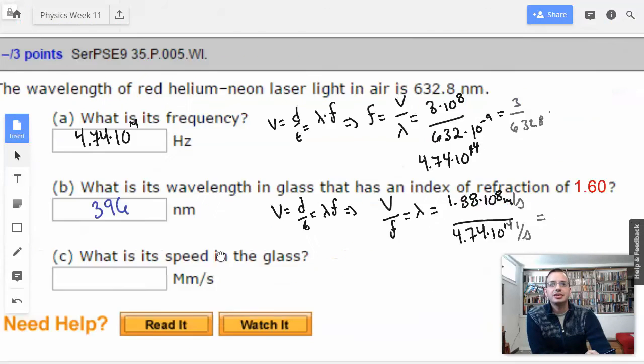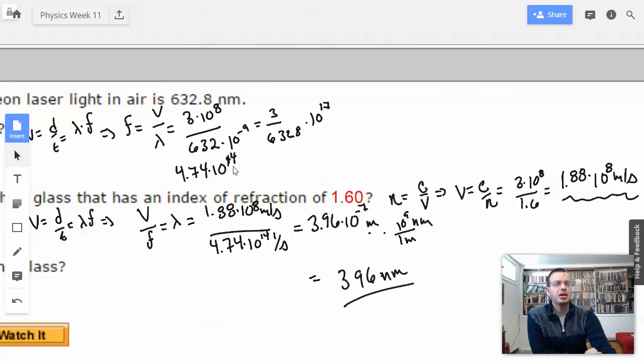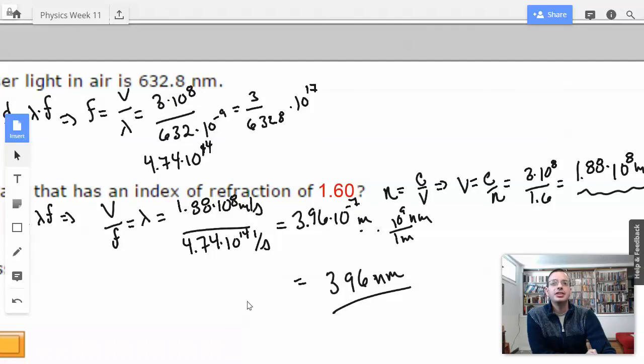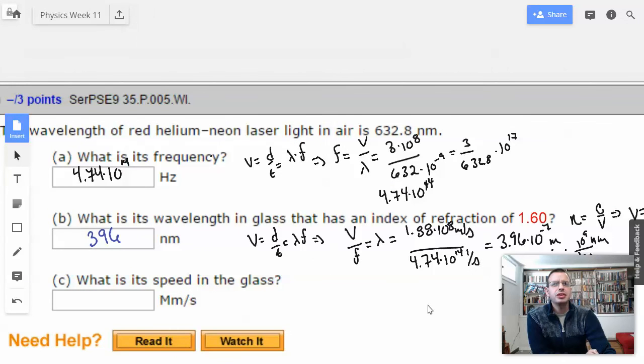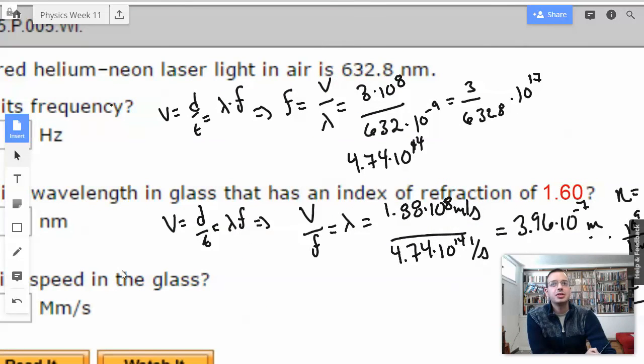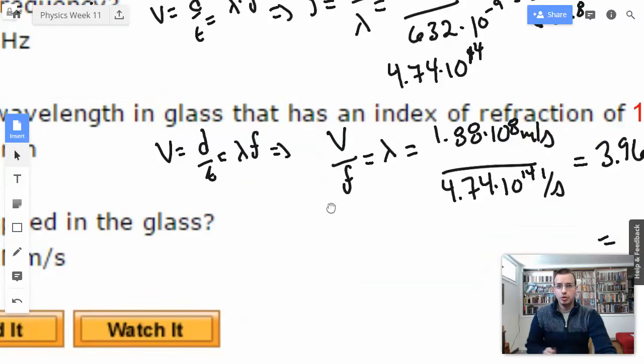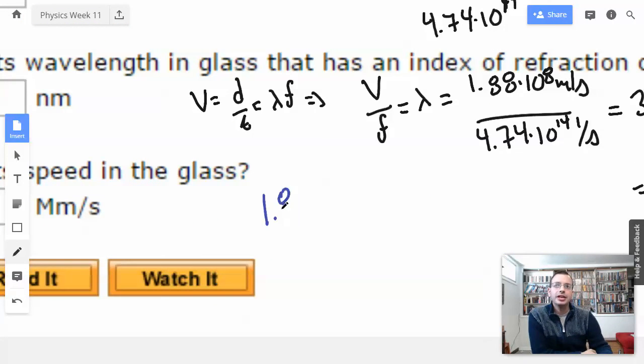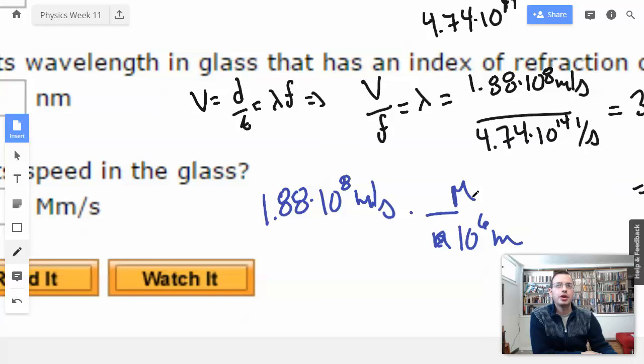What is its speed in the glass? I think they intended us to do 632 divided by 1.6. Doesn't matter. I already did this right here. 1.88 times 10 to the 8th meters per second. They want megameters. So 10 to the 6th meters is the same as 1 megameter. This will become 10 to the 2nd. We have 188 megameters per second.